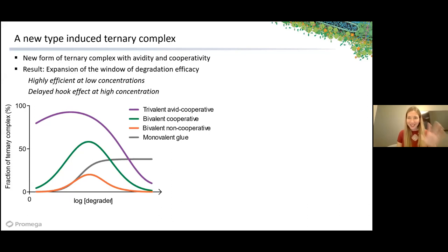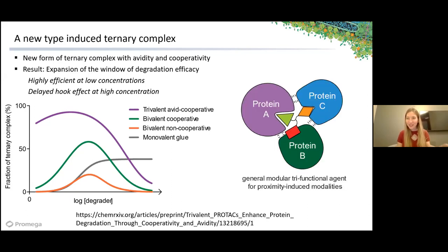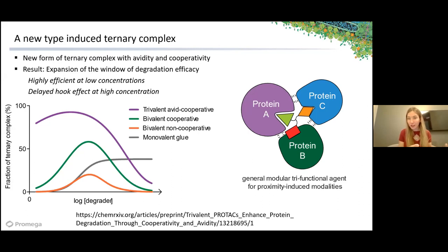Looking at the bigger picture, while we worked on BET proteins and successfully degraded them at such low concentrations, we think the trivalent is really a new modality for bringing more than one protein to anything—it doesn't have to be degradation, and that third component doesn't have to be an E3 ligase. As we look at all the new induced molecular proximity compounds, you could really think about doing a lot of things with a trivalent compound.